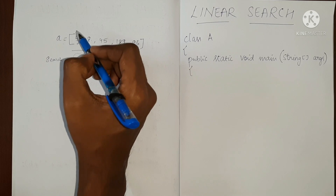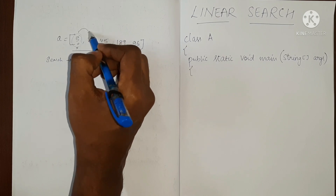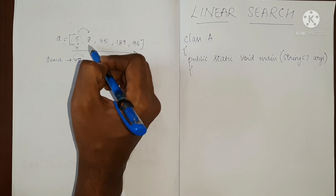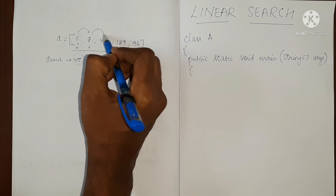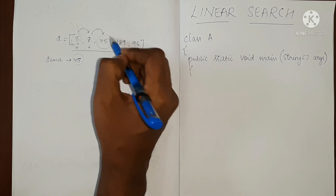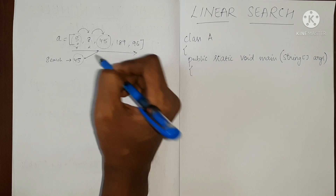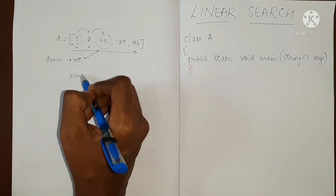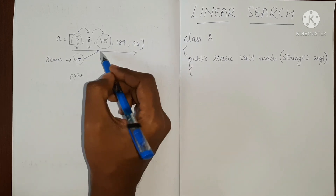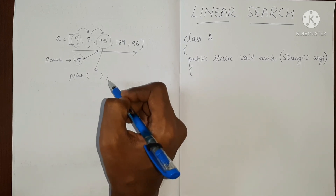We will start from the beginning and check if 5 is equal to 45 — it is not. So we move to the next location and check if it is equal to 45 — it is not equal. We move to the next index location. Now it is a match: 45, we have found it. So we will simply print this index location, and that is it.